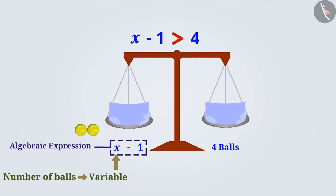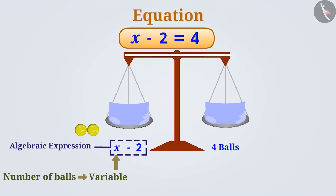Now if we take one more ball out, then the total of two balls from x balls is reduced. That is, the expression can be represented as x-2 and with that, the scales are also balanced. Therefore, now we can say that the number of balls on either side is equal: x-2 equals 4. This is called an equation.